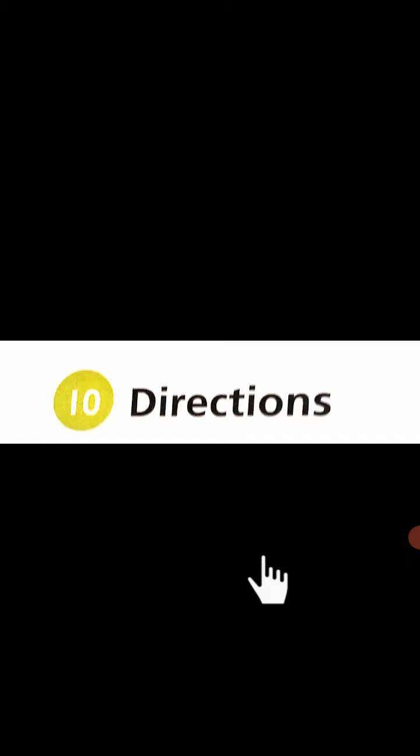Directions means simaten, sides. Yani koji cheez kis side par hai, kis taraf hai ya kaha hai — meaning which side something is on, which direction it is in, or where it is. We will learn and read about this in this lesson.